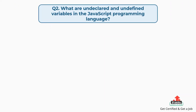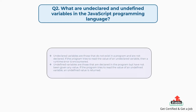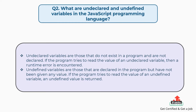Question number two: what are undeclared and undefined variables in JavaScript? Undeclared variables are those that do not exist in a program and are not declared. If the program tries to read the value of an undeclared variable, a runtime error is encountered. Undefined variables are those that are declared in the program but have not been given any value. If the program tries to read the value of an undefined variable, an undefined value is returned.